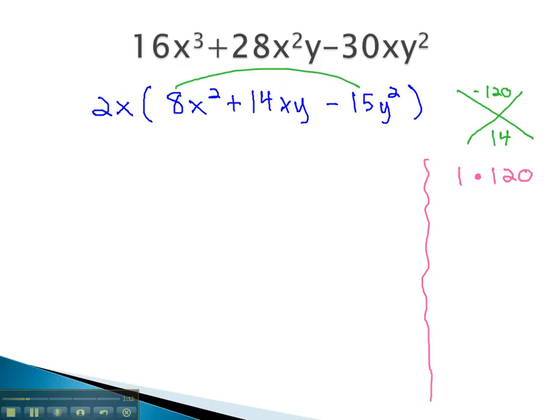1 times 120 gives us the 120. However, it clearly will not give us the 14. 2 goes into 120 60 times. However, again, we cannot use 2 and 60 to equal the 14.